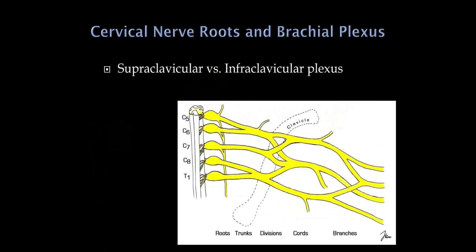Starting with the upper extremity: the roots that supply the upper extremity are C5 through T1. We can see the nerve roots coming out and then forming the plexus. The plexus is often difficult to remember, but a very helpful big-picture point is that the clavicle, when the arms are at the side, overlies the divisions. We speak of a plexus above the clavicle — the supraclavicular plexus — and an infraclavicular plexus.